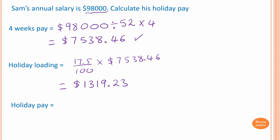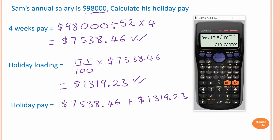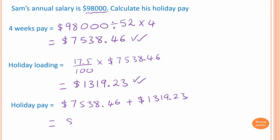Holiday pay equals four-week pay plus the holiday loading: seven thousand five hundred and thirty-eight dollars and forty-six cents plus one thousand three hundred and nineteen dollars and twenty-three cents. Using the calculator, that equals eight thousand eight hundred and fifty-seven dollars and sixty-nine cents. That is Sam's holiday pay.